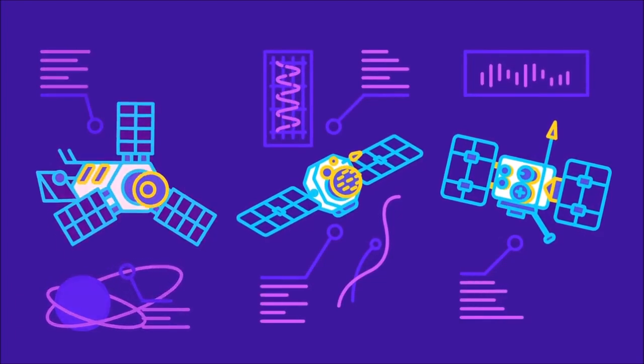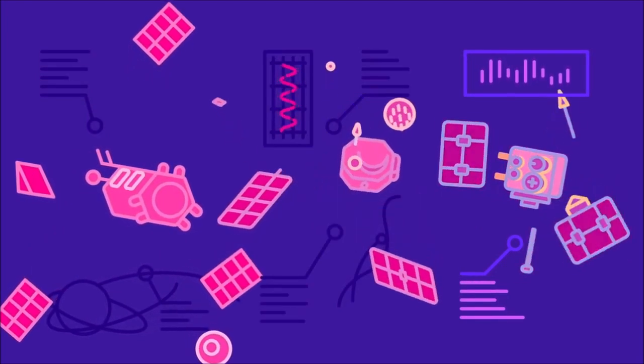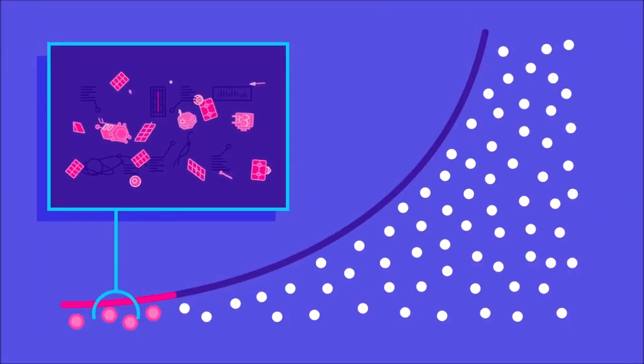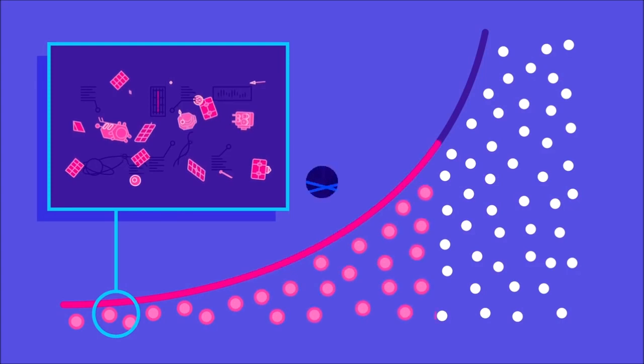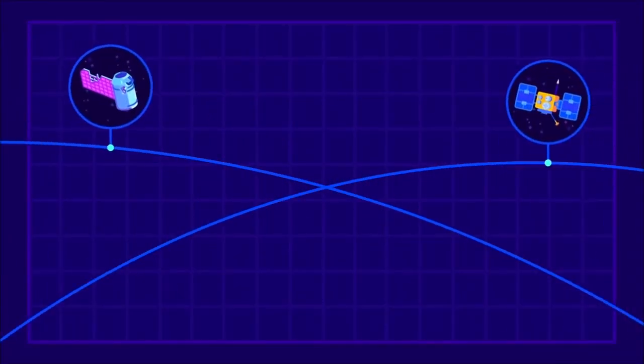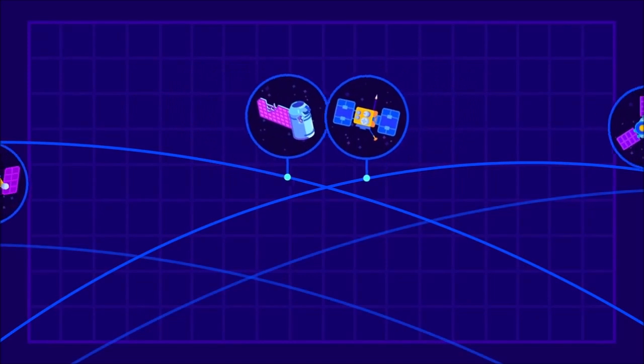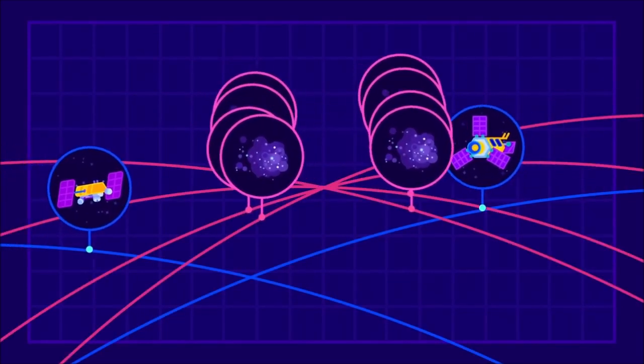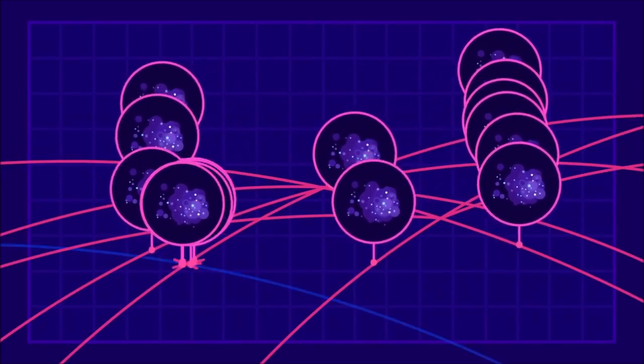As more and more satellites are destroyed, the destruction accelerates exponentially, eventually destroying everything parked in orbit. But space is very empty, so the first few collisions may take a long time. By the time we realize what's happening, it's too late.